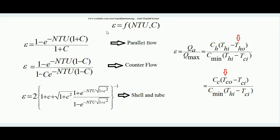It is found by derivation that the effectiveness of any heat exchanger is always a function of NTU and C. For a parallel flow heat exchanger: ε = [1 − e^(−NTU·(1+C))] / (1+C). For a counter flow heat exchanger: ε = [1 − e^(−NTU·(1−C))] / [1 − C·e^(−NTU·(1−C))]. There is also a corresponding expression for shell-and-tube heat exchangers. These are all derived — not empirical — expressions.